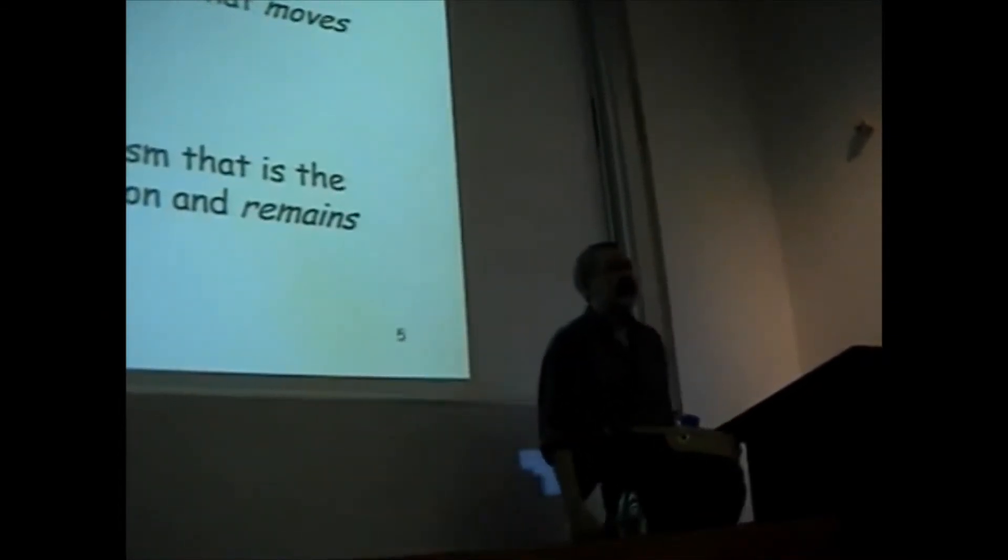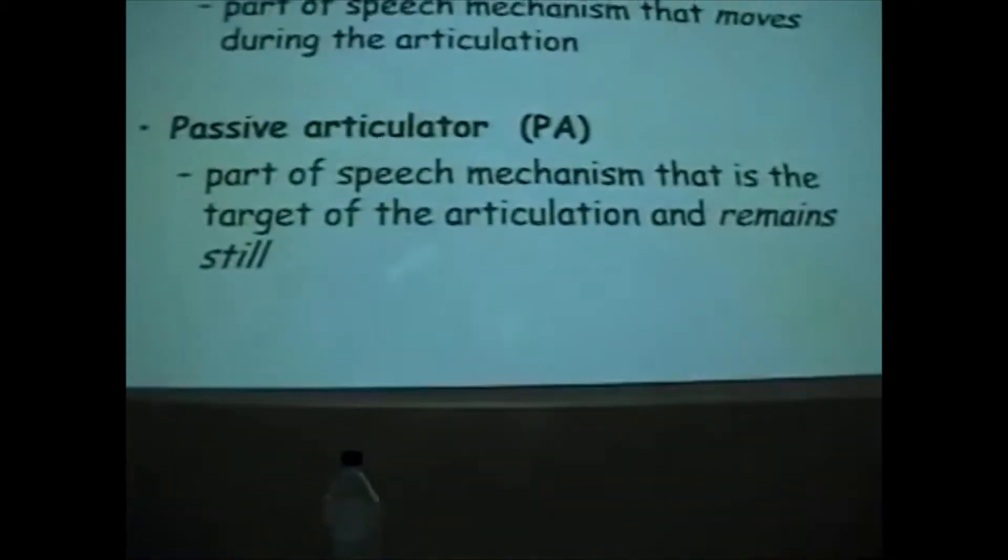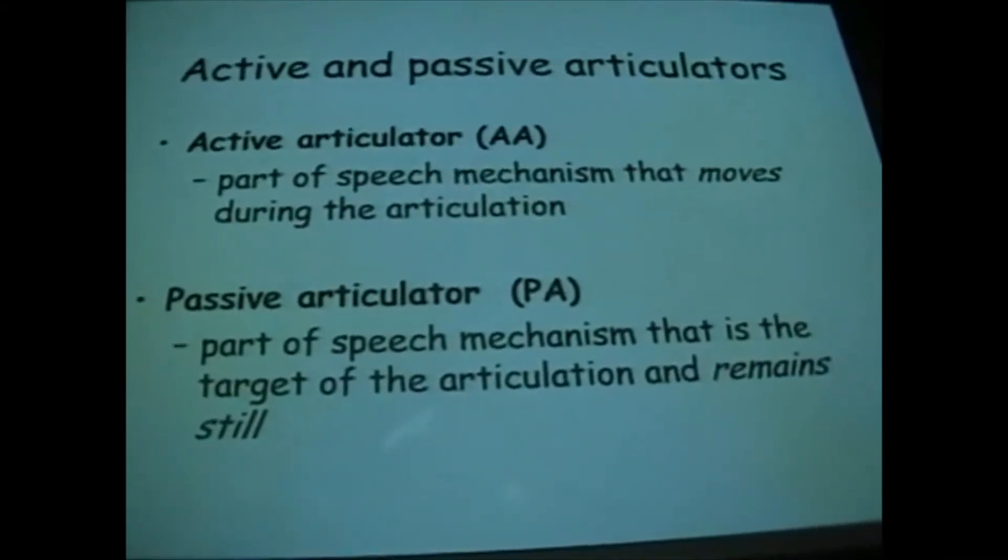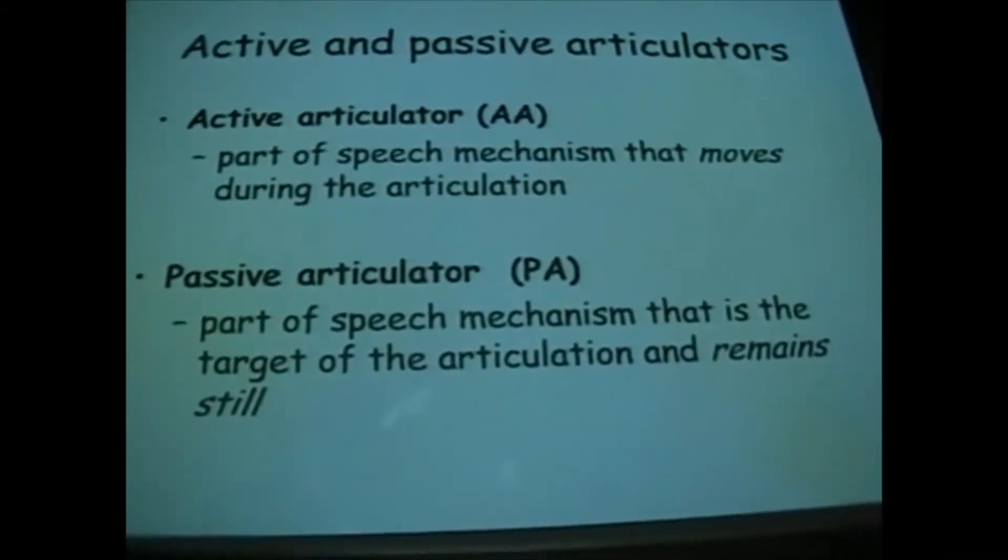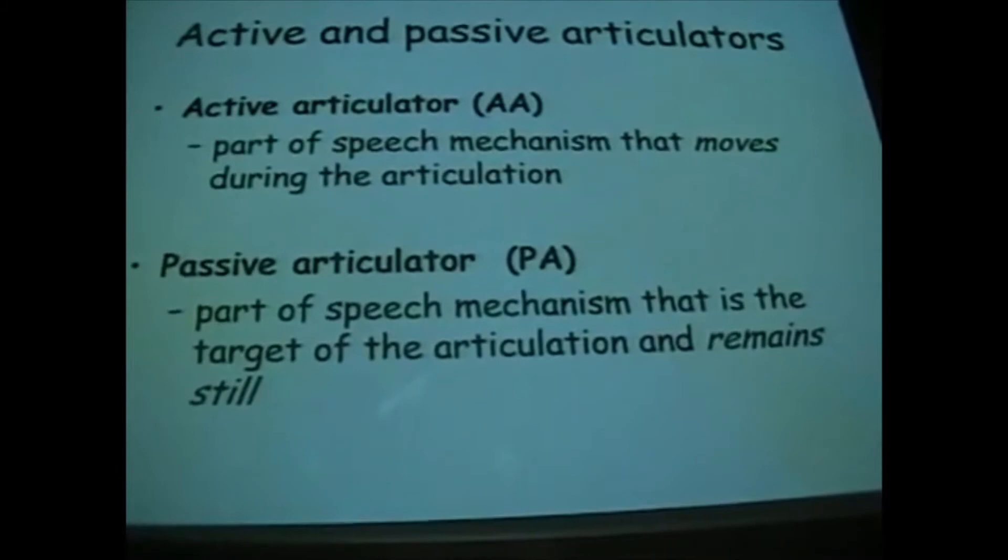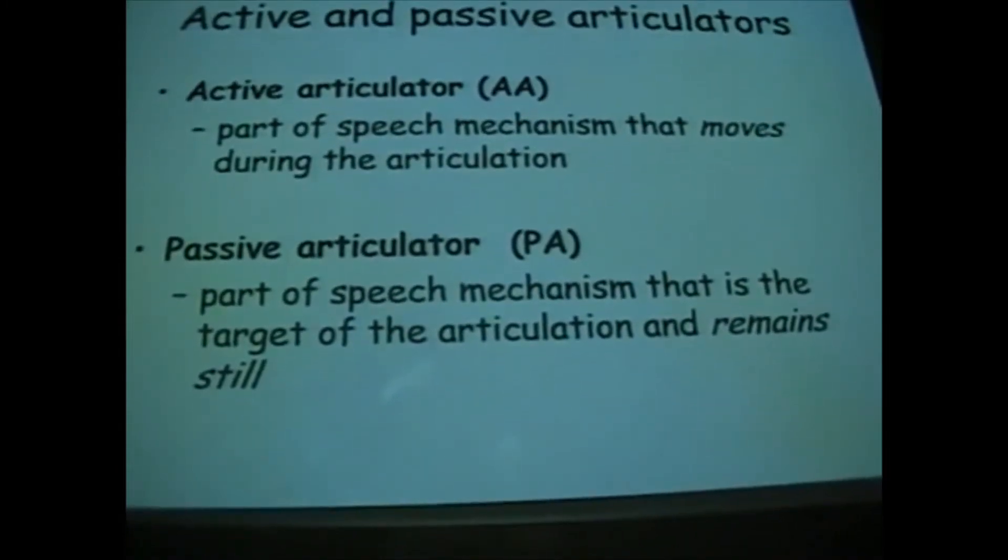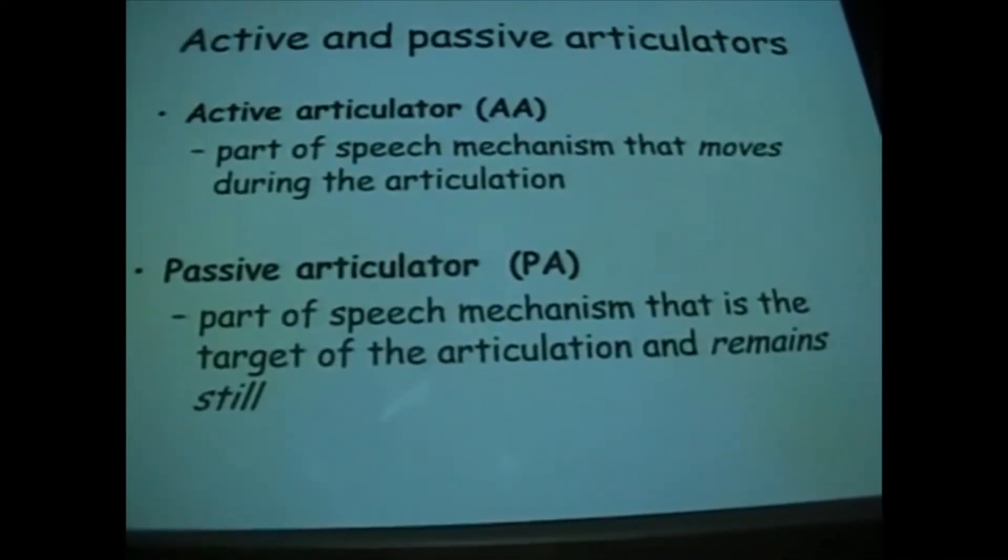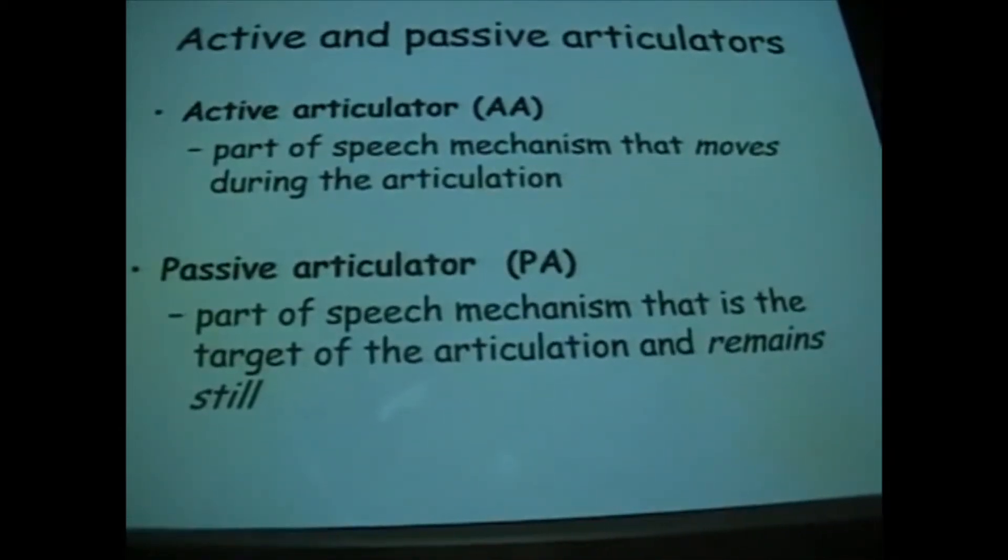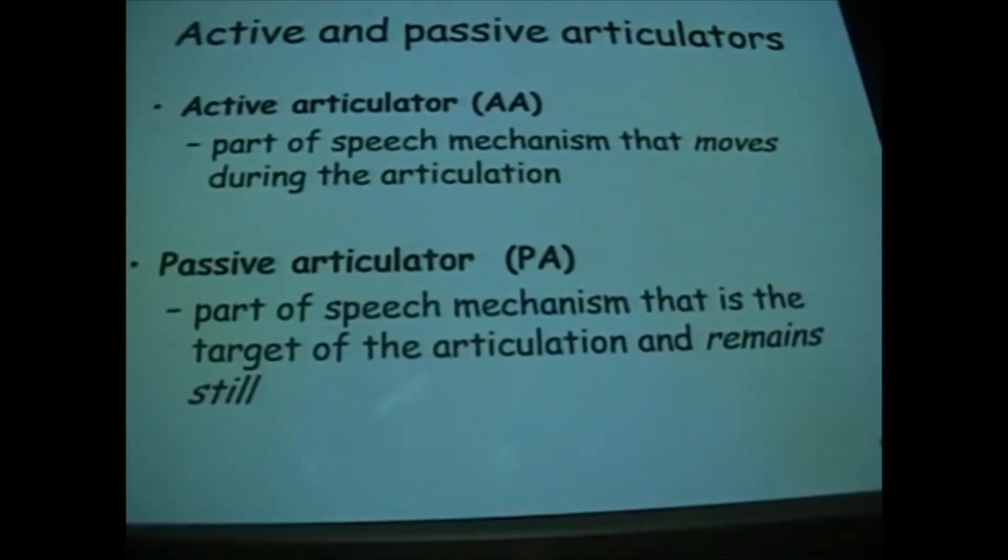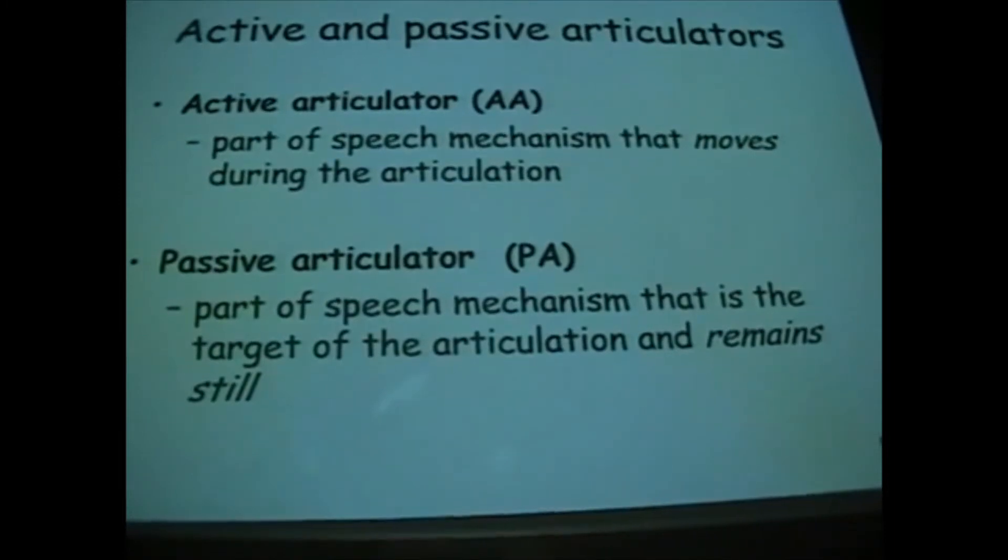This then gives you the distinction between fortis and lenis. We're going to move on now to place of articulation. But before we deal with it, we need to talk about two types of articulator. We can distinguish between an active articulator, that is to say a part of the speech mechanism that moves during an articulation, and a passive articulator. The passive articulator is the part that stays still. It's the target of the articulation.